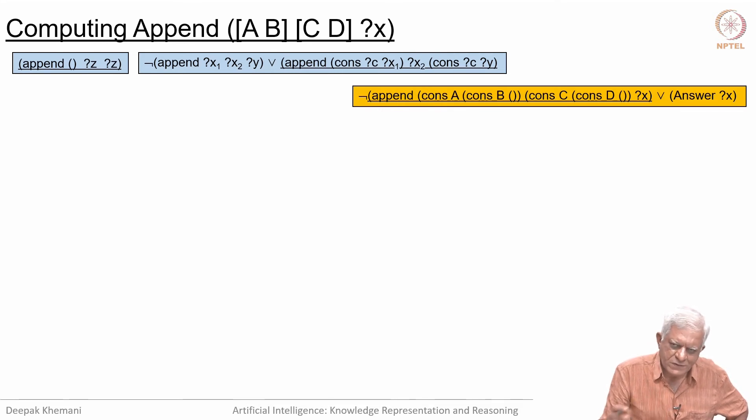The query is given on the top in the heading. It says that if I append a list which contains A and B to a list which contains C and D, then what will I get, what will that X be. The list containing A and B is represented as cons(A, cons(B, nil)) and list containing C and D is represented by cons(C, cons(D, nil)). The query is X, and for good measure we have added the answer predicate here so that we will have the answer computed as we go along. Our answer is going to be contained in a variable called X which will stand for some list.